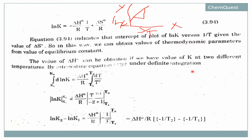We now apply definite integration conditions. The lower limit on the left side is K1 and the upper limit is K2 for d(ln K). On the right side, the variable is dT/T², with lower limit T1 and upper limit T2. T1 is the lower limit and T2 is the upper limit of temperature.